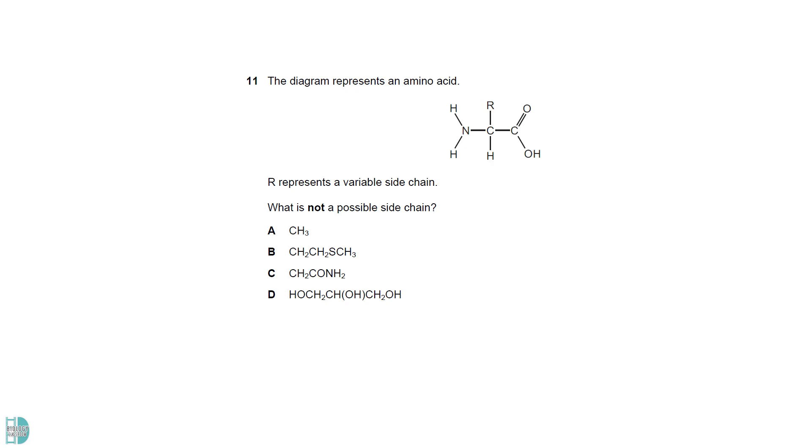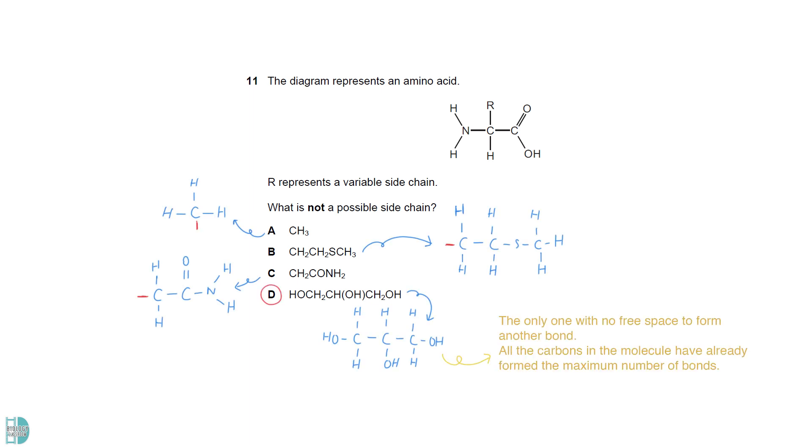If you draw out the structural formula of all the options, you will realize that D is the only one with no free space to form a bond with the carbon in the amino acid. All the carbons in the molecule have already formed the maximum number of bonds.